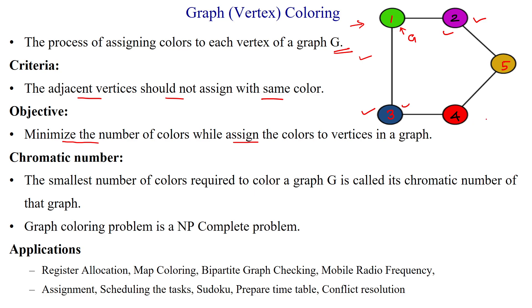Here we have used five colors for five different vertices in the given graph, but we should minimize the number of colors by assigning different colors to adjacent vertices. The chromatic number is the smallest number of colors used to assign to all the vertices in the given graph, defining the minimum number of colors assigned to the graph.